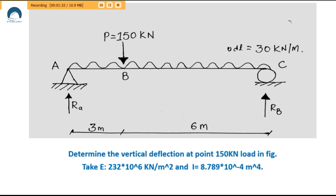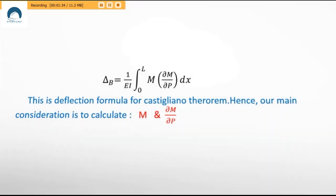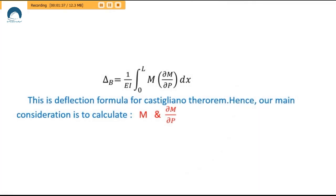Since we are asked to calculate deflection, it is better to memorize the standard relation for delta B rather than deriving it. According to the formula, we need to calculate the moment M and its partial derivative with respect to load P — that partial derivative is not a big deal once you have the moment.